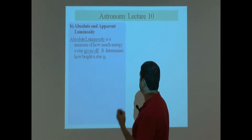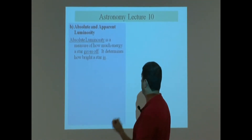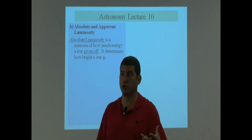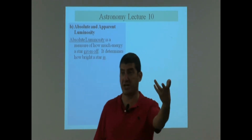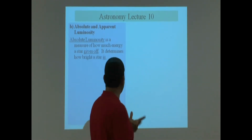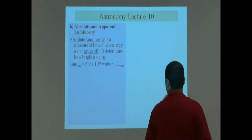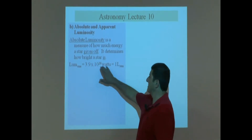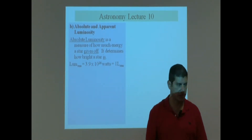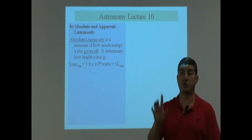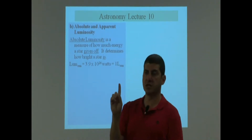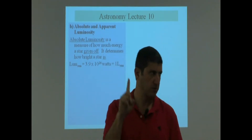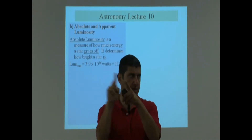Absolute luminosity is a measure of how much energy a star gives off. The more energy it gives off, the brighter it will look in the sky — it determines how bright the star is. The luminosity of the Sun is 3.9 times 10 to the 26 watts. We're going to call that 1 so we can compare other stars to it.